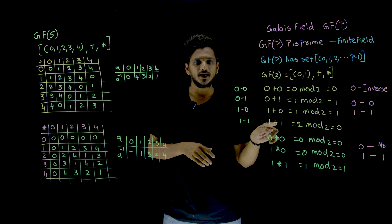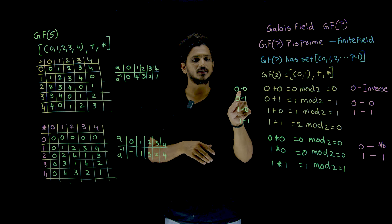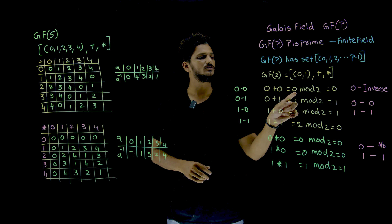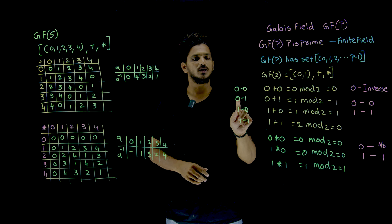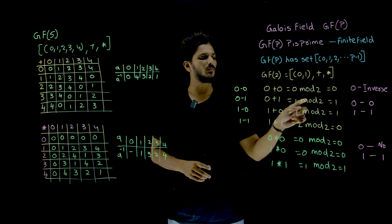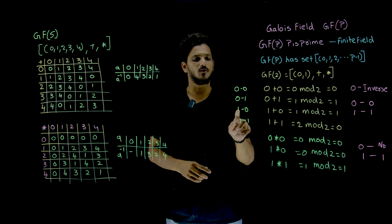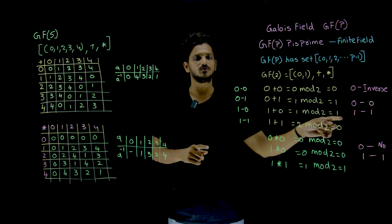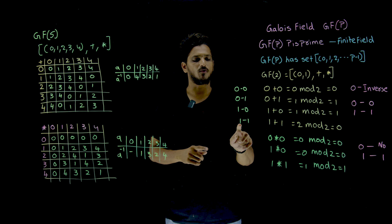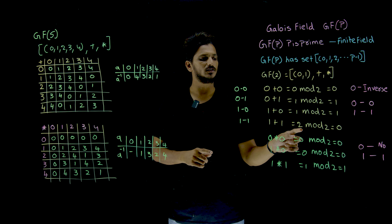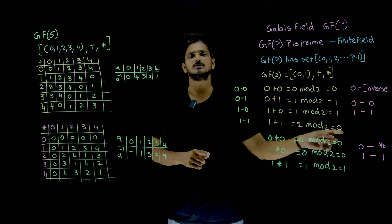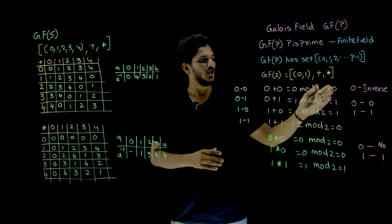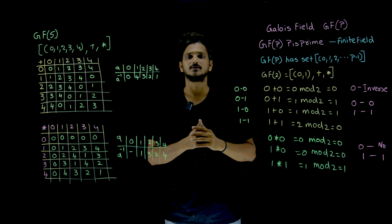One more important point: not only addition, subtraction is also satisfied here. 0 minus 0 is 0, 0 modulus 2 is 0. 0 minus 1 is minus 1, minus 1 modulus 2 is 1. 1 minus 0 is 1, 1 modulus 2 is 1. 1 minus 1 is 0, 0 modulus 2 is 0. So addition and subtraction give the same answers.